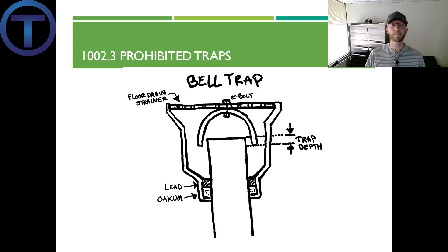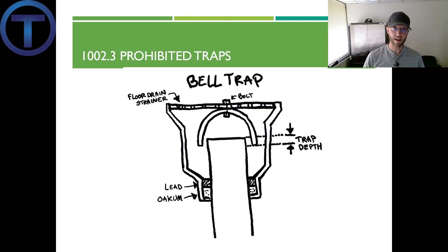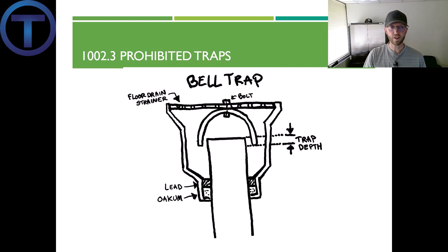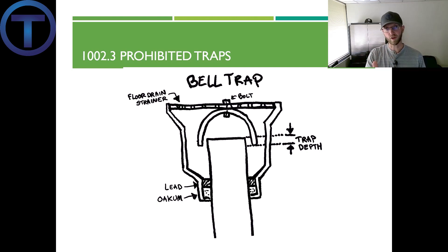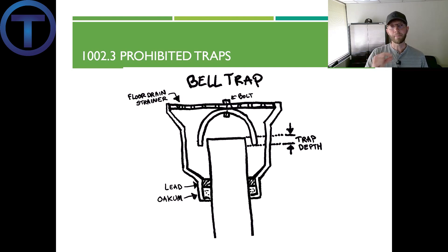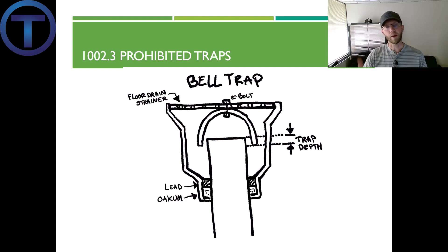Prohibited trap number two: the bell trap. This trap is created by extending the pipe up to the floor drain. There's a strainer on top with a bell-shaped piece underneath. The bell would come down over the pipe, creating a slight overlap that would form a trap. However, these have a very minimal trap depth — they would evaporate quickly and very much stunk. They're out.